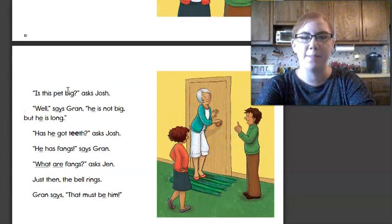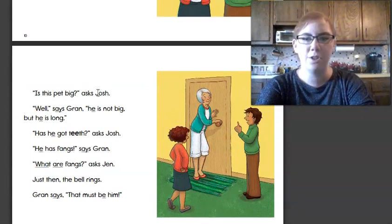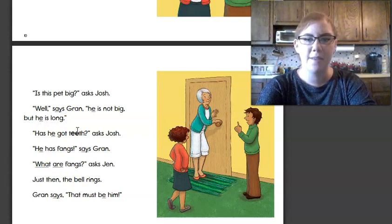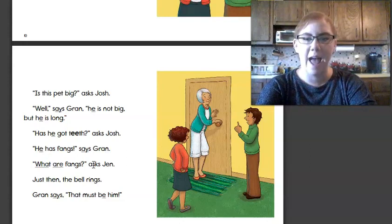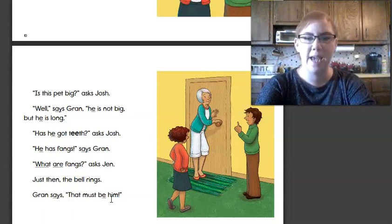Is this pet big, asks Josh. Well, says Grand. He is not big, but he is long. Has he got teeth, asks Josh. He has fangs, says Grand. What are fangs, asks Jen. Just then, the bell rings. Grand says, That must be him.